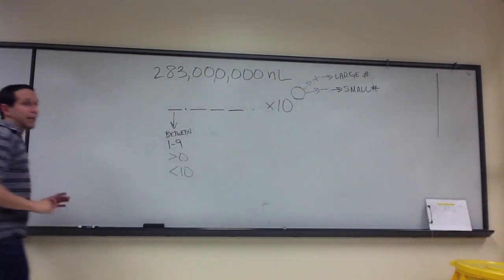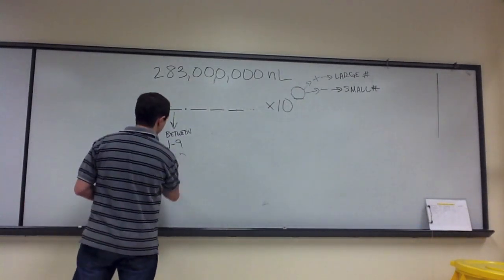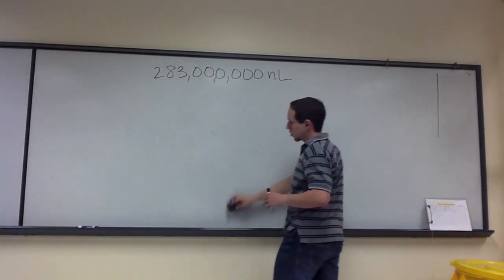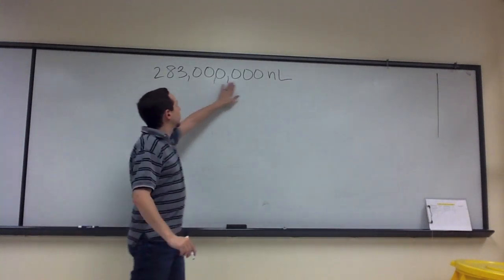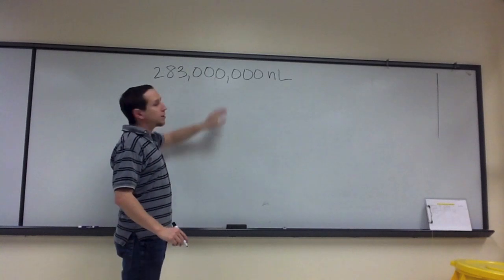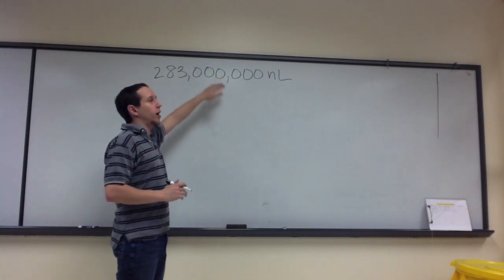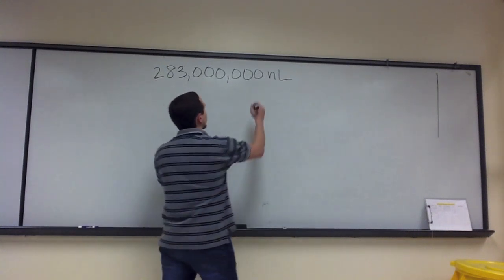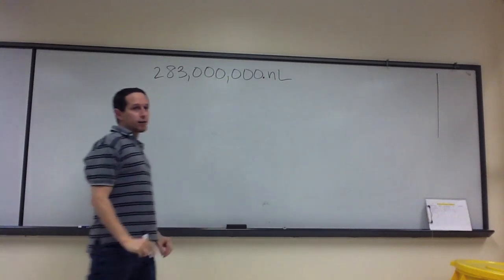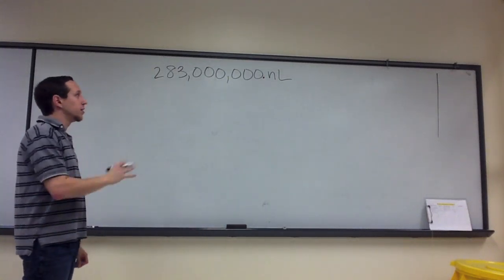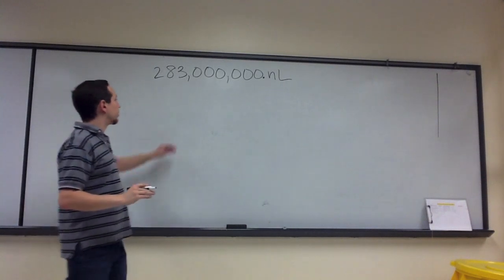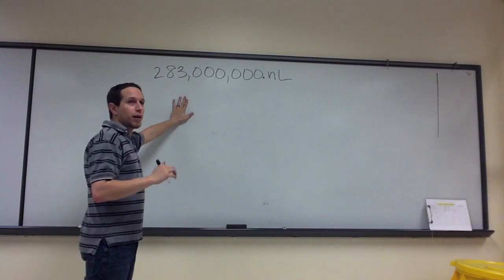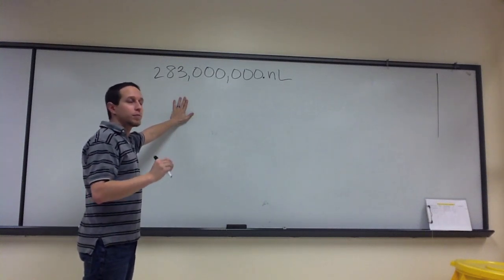Those are the rules — now let's apply them. We have 283 million nanoliters. This is going to look similar to what we did in the visual way of converting metric units. I'm going to locate the decimal point in my number, and I'm going to move it through the number until I get a number that is greater than zero and less than ten — between 1 and 9.